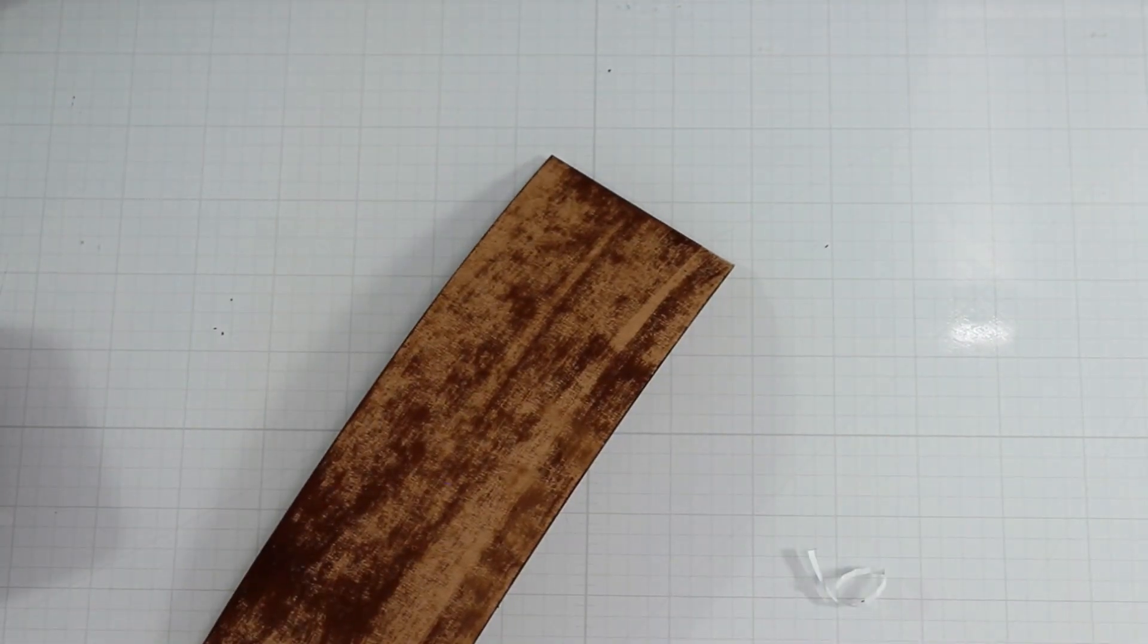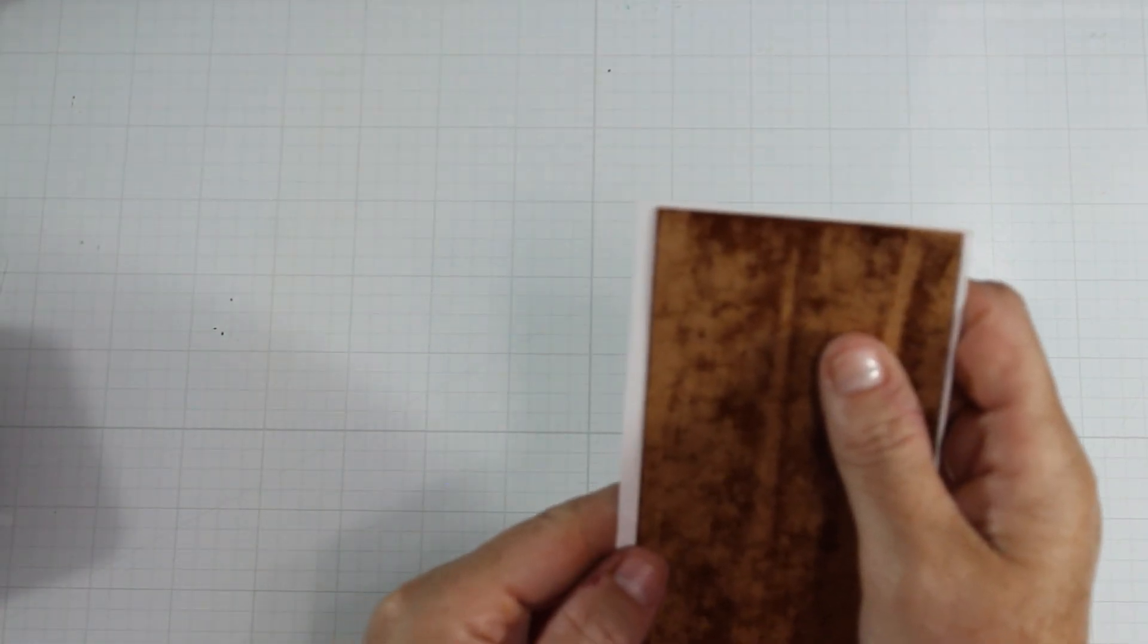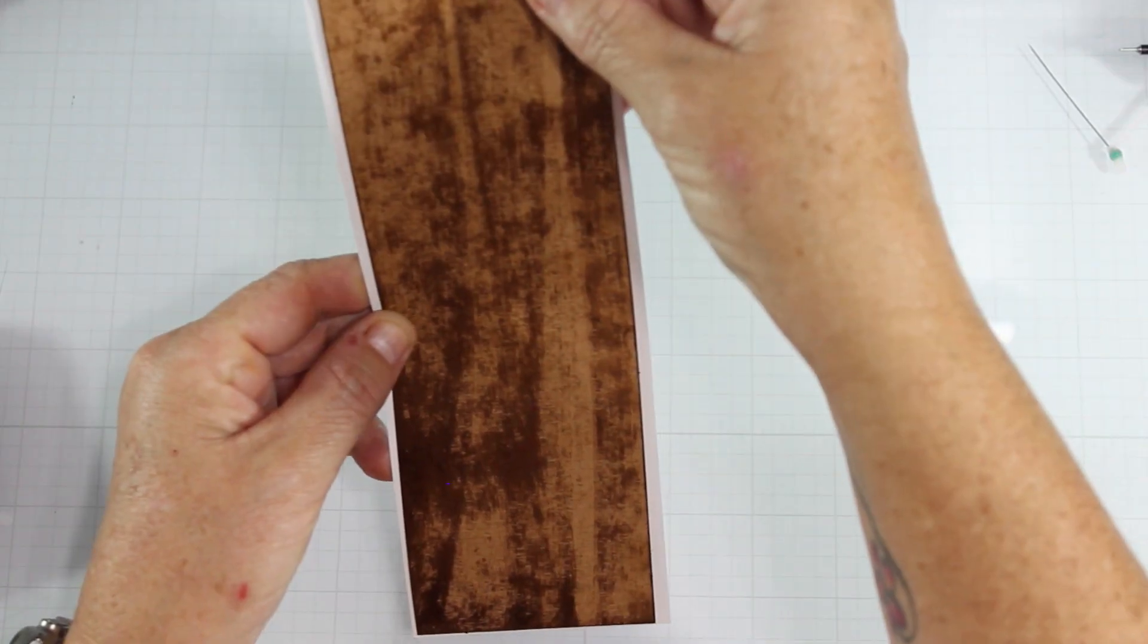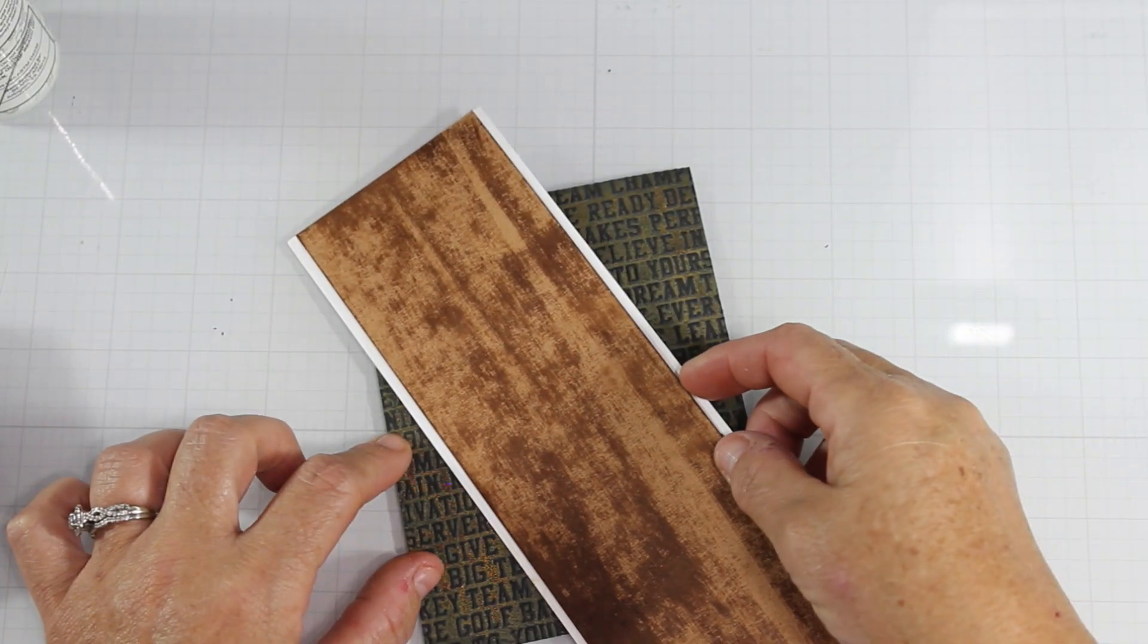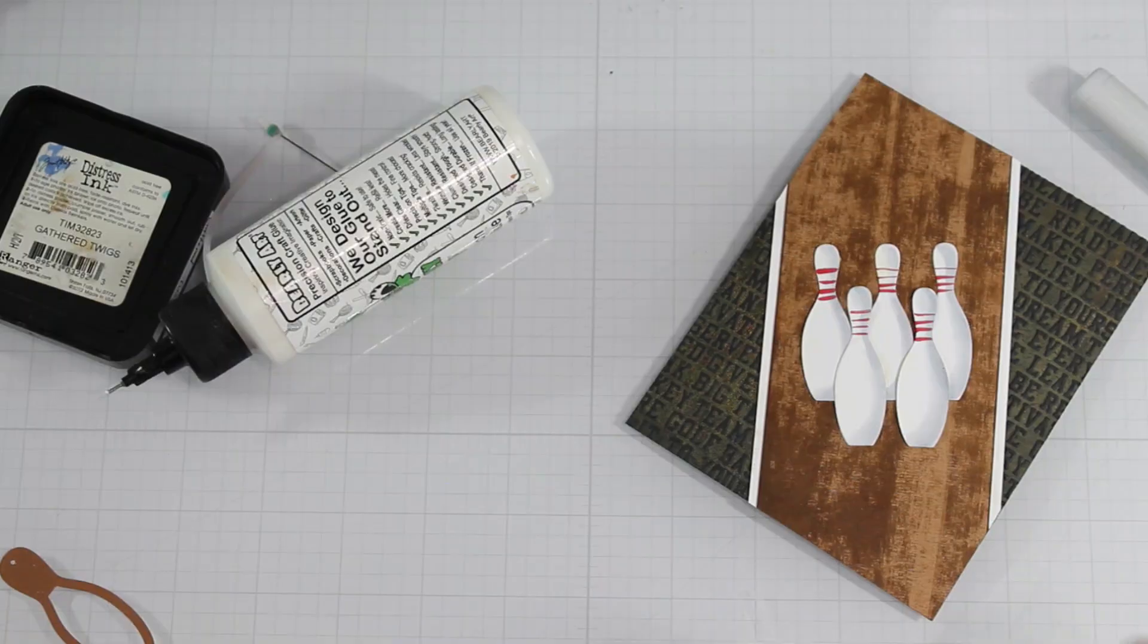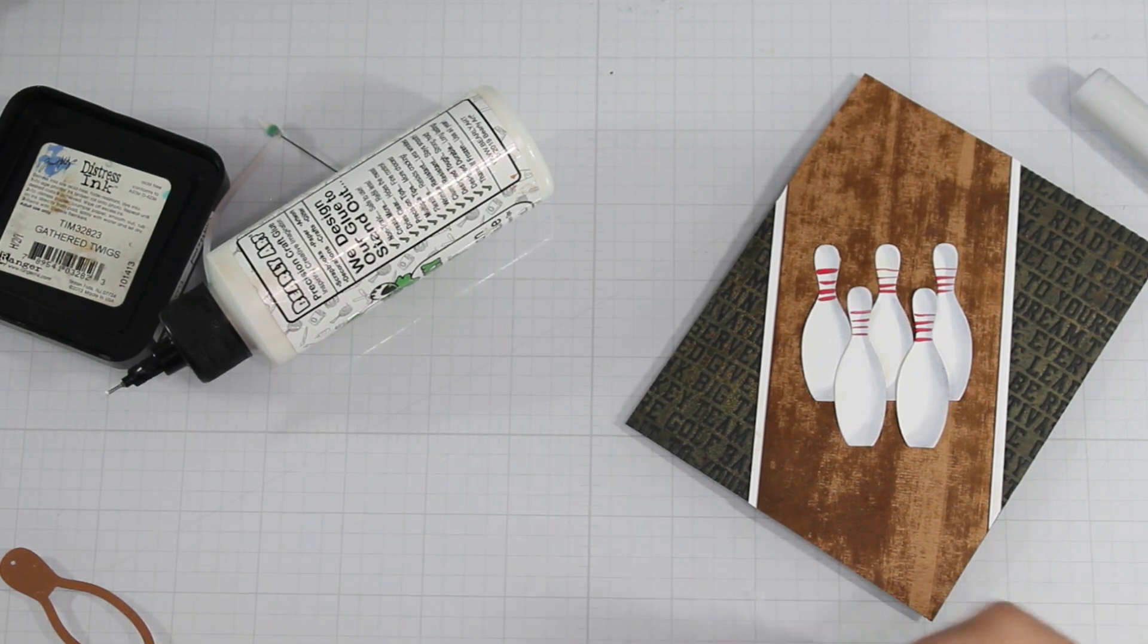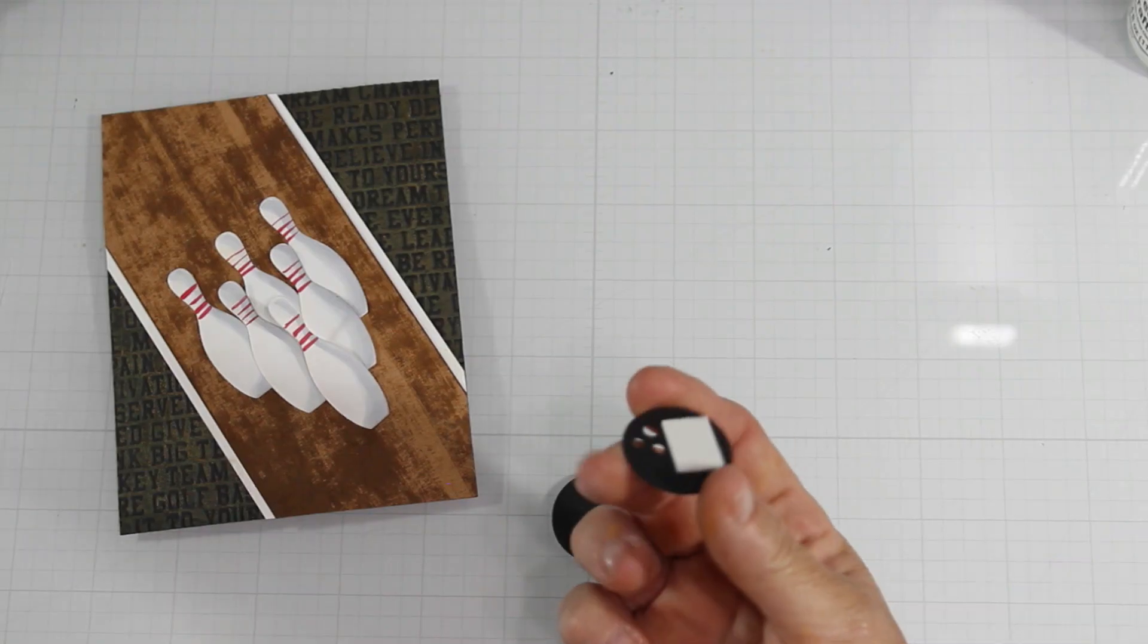So the reason I chose to do a bowling card is that my oldest daughter was on the bowling team. So I thought I would pay homage to her. So I am backing this in a white panel just so that it will pop off the page. And then I adhere that on the diagonal and I trim off the edges so that it fits on the A2 card.